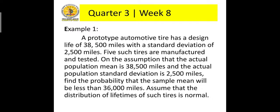Let's take a look at the first example. A prototype automotive tire has a design life of 38,500 miles with a standard deviation of 2,500 miles. Five such tires are manufactured and tested. On the assumption that the actual population mean is 38,500 miles and the actual population standard deviation is 2,500 miles, find the probability that the sample mean will be less than 36,000 miles. Assume that the distribution of lifetimes of such tires is normal.